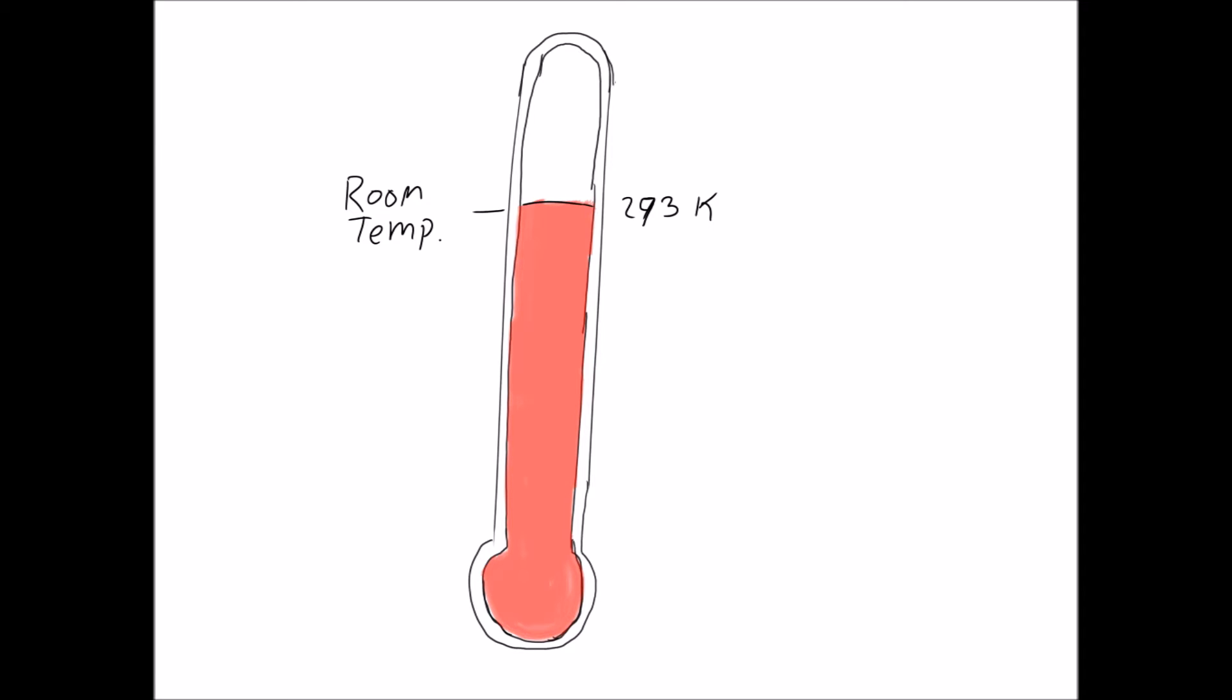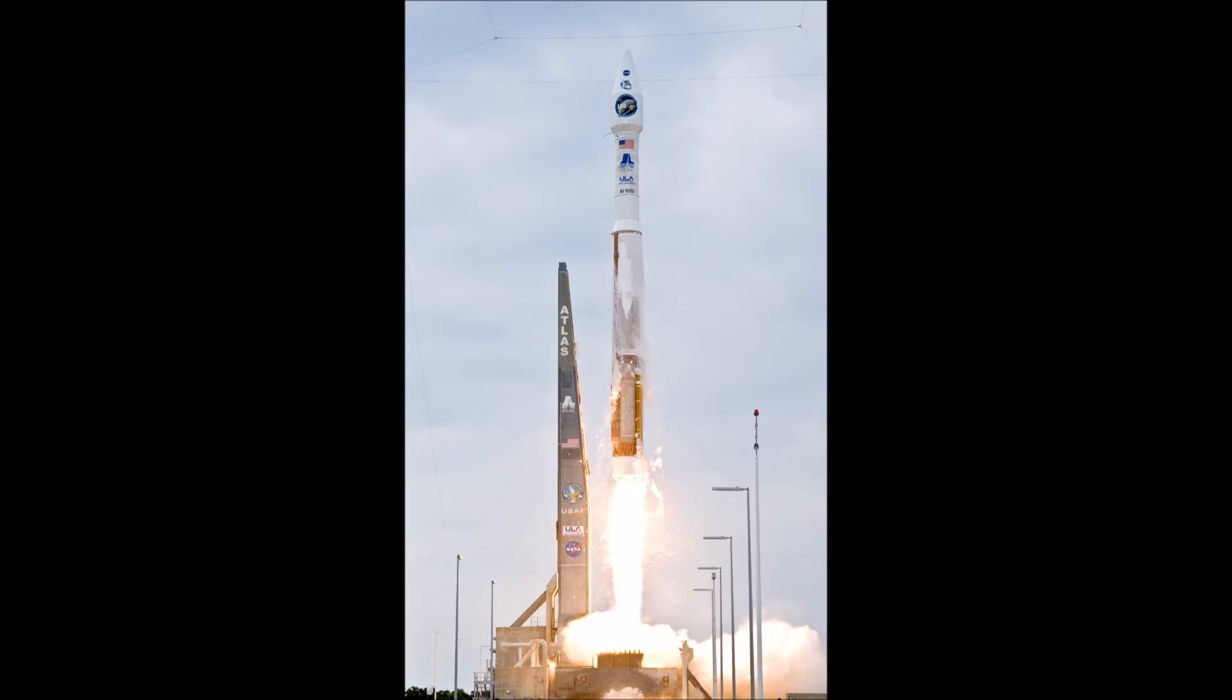To give a frame of reference, room temperature is 293 Kelvin and water freezes at 273 Kelvin. If you've ever seen footage of a rocket launch, you'll notice that many times huge chunks of ice fall from the rockets as it begins to move. This ice forms because the tanks must be kept at such cold temperatures and moisture that comes into contact with the rocket tanks condenses into ice.